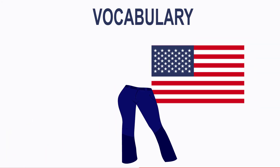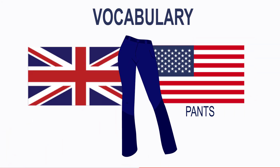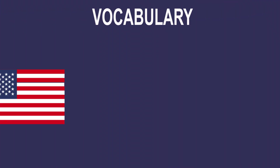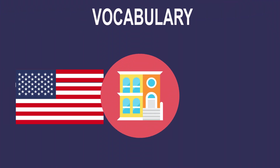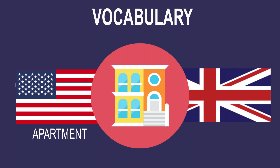In American English, this is pants. And in British English, it's trousers — and 'pants' in British English means underwear. In America, they rent an apartment. In Britain, they rent a flat.